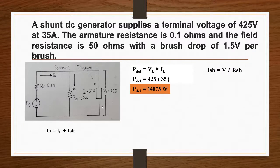The shunt current is 425 volts divided by 50 ohms, which equals 8.5 ampere.